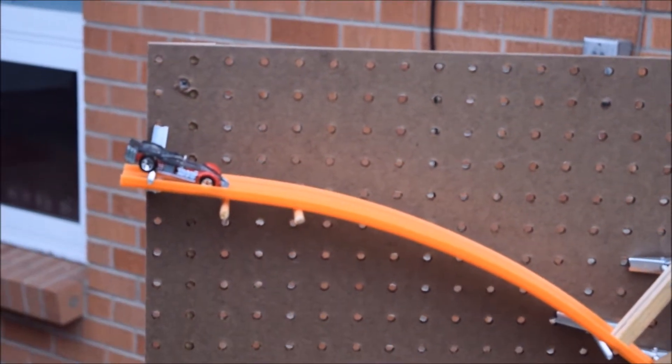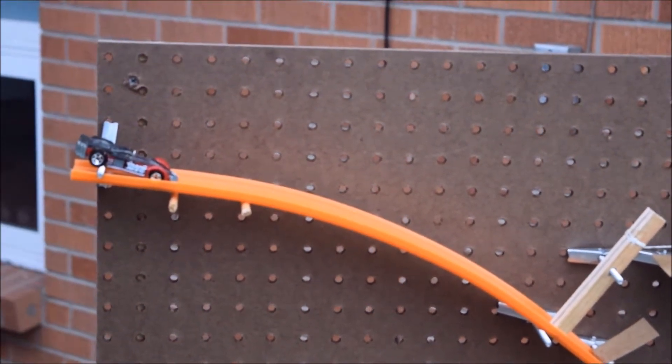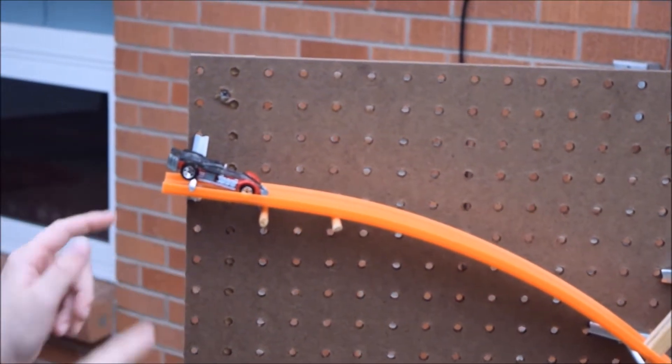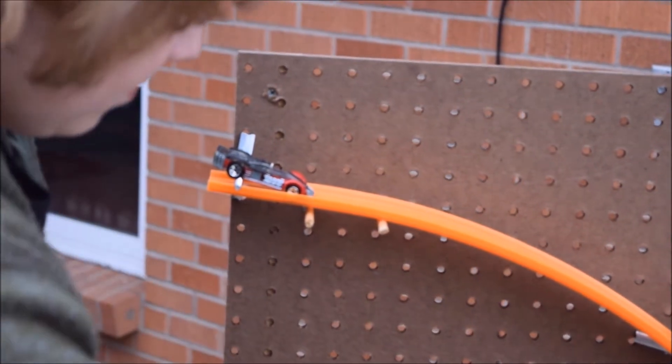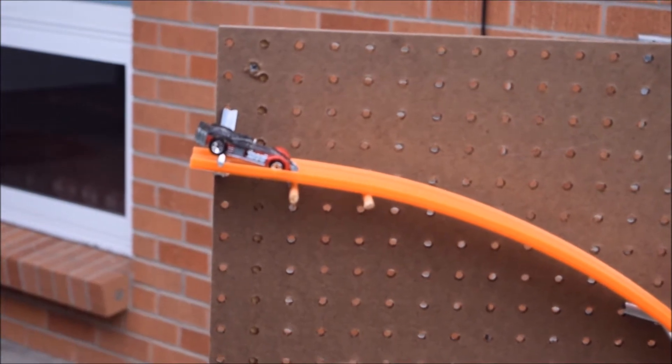What we have here is the Rube Goldberg cracking egg machine. We've got screws everywhere to hold up the machine because they are really useful in holding up machines, a machine for holding up a machine.